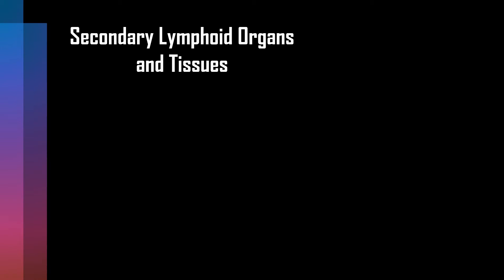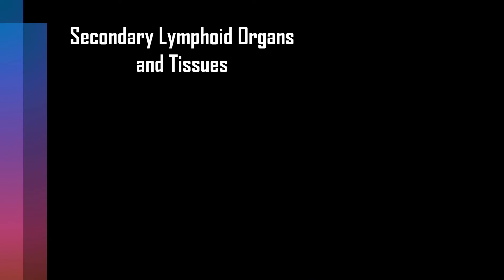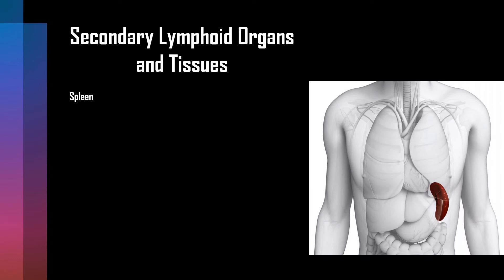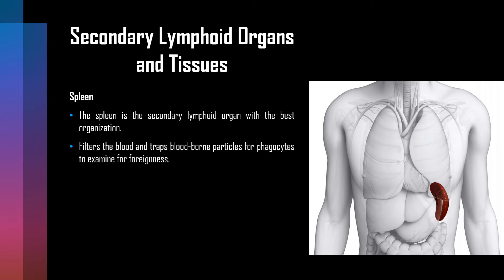Next we have secondary lymphoid organs and tissues, which consist of the spleen, lymph nodes, and lymphoid tissues. The spleen is the most highly organized secondary lymphoid organ — it is a large organ located in the abdominal cavity.